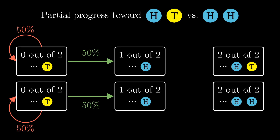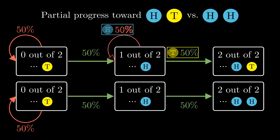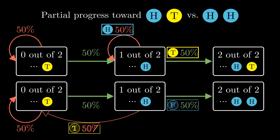Starting from the halfway point, both sequences have a 50% chance to finish on the next flip. The only difference between the two sequences is what happens when you are at the 1-out-of-2 state and you miss. For heads-tails, missing means flipping another heads, so you stay at the 1-out-of-2 state — like a checkpoint where your progress is saved. For heads-heads, missing means flipping a tails, and you have to go all the way back to the 0-out-of-2 state and start over. Clearly it's going to be faster when your progress gets saved halfway, so heads-tails should indeed be faster than heads-heads.